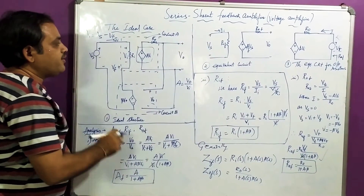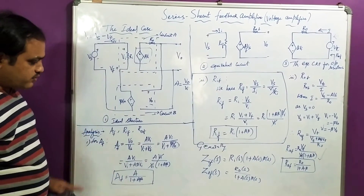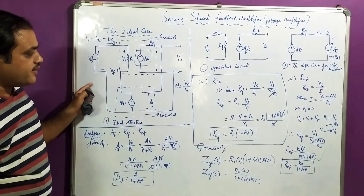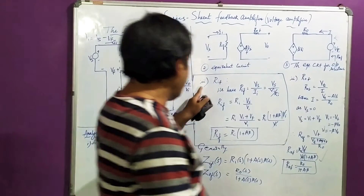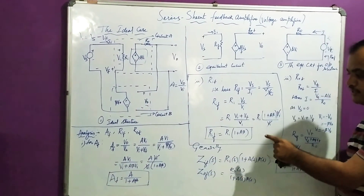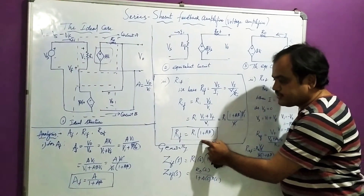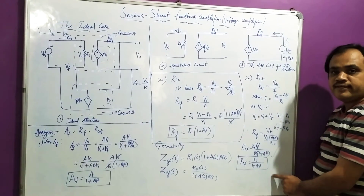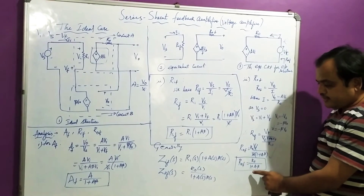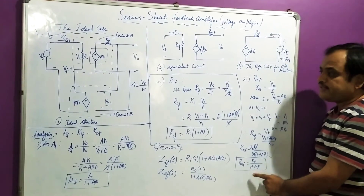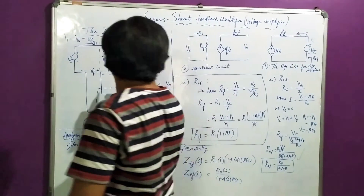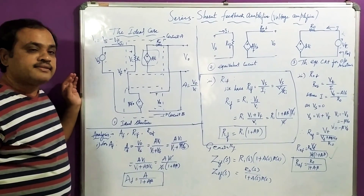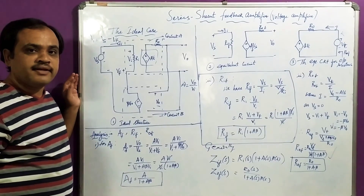To summarize, we have derived three things: AF = A/(1 + Aβ), confirming negative feedback; RIF = RI·(1 + Aβ), showing input resistance is very high; and ROF = R0/(1 + Aβ), showing output resistance with feedback is very small. I hope you have understood this series-shunt feedback amplifier, also called a voltage amplifier. In the next session, we will look at the next topology. Thank you.